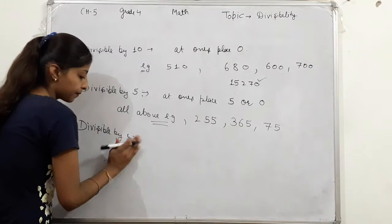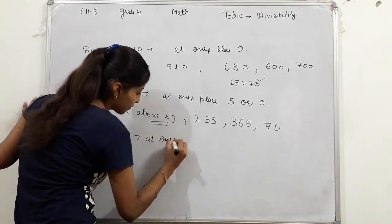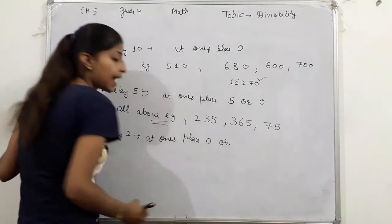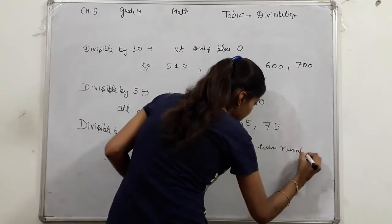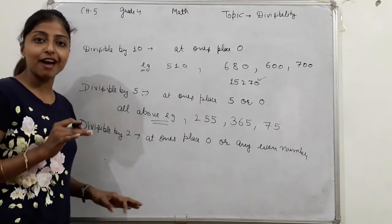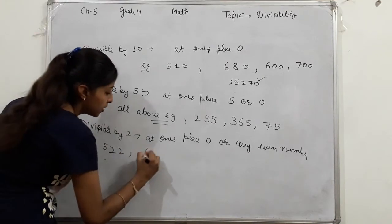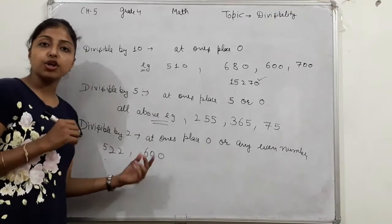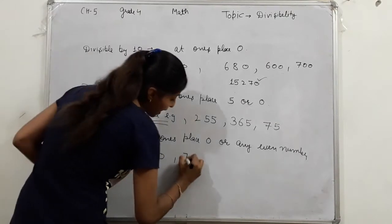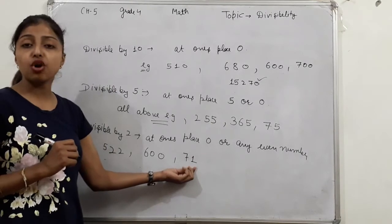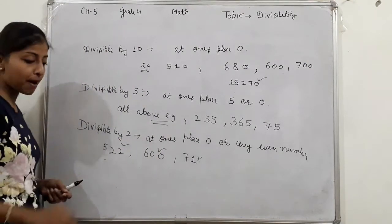Divisible by 2. Once place has what? Zero or any even number. So you check once place - either zero or even number. Like 522 - once place has even. 600 - here zero is there, so it divides by 2. Because once place has zero and here even. But if I take 571 - once place has 1. This is not an even number. So will this divide by 2? No. This one will divide by 2.